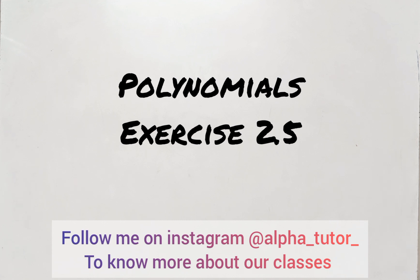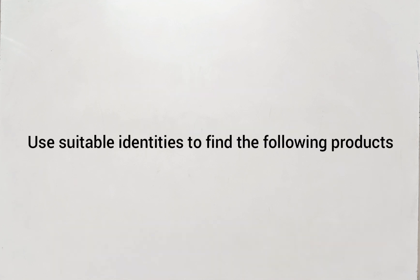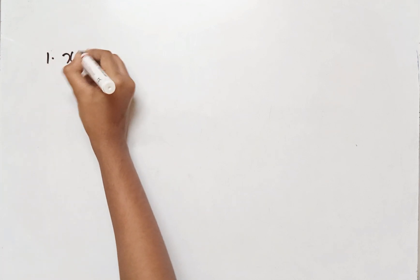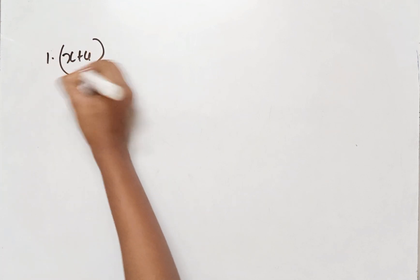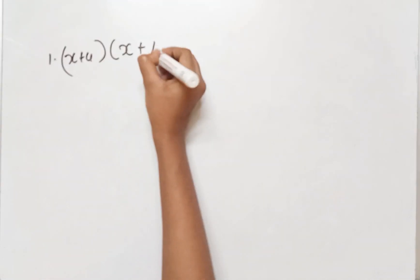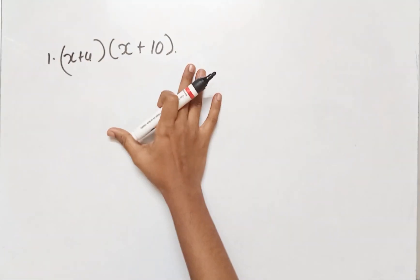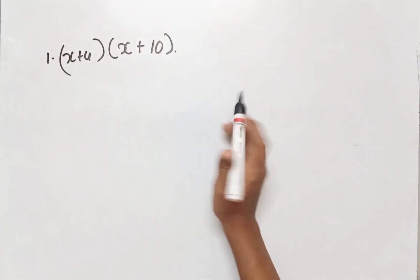Exercise 2.5, the first question: use suitable identities to find the following products. We are asked to find products using identities.